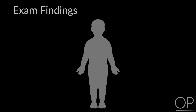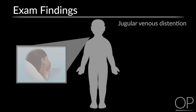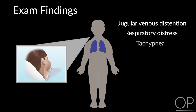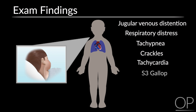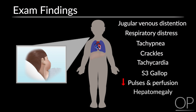Findings to look for on exam include jugular venous distension, respiratory signs such as respiratory distress, tachypnea, or crackles, cardiac signs such as tachycardia and an S3 gallop, decreased pulses and perfusion, hepatomegaly, and peripheral edema.